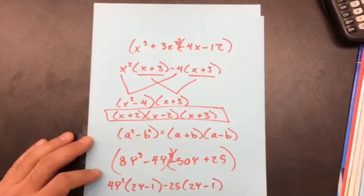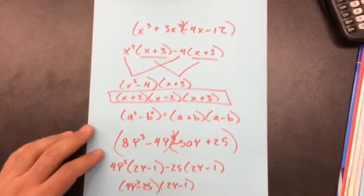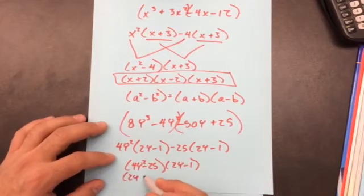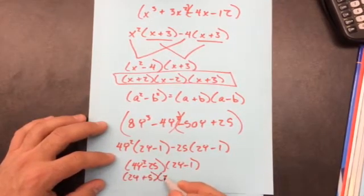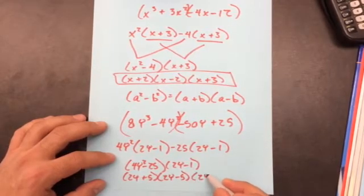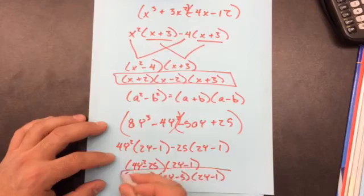They're the same. So it's going to be 2y - 1. And what's on the outside? 4y^2 - 25. Again, this is the difference of two squares. So it's going to be 2y + 5, 2y - 5, and then the one that I just got, 2y - 1. And that's the final answer.